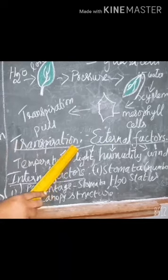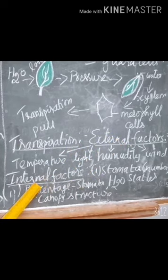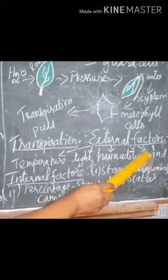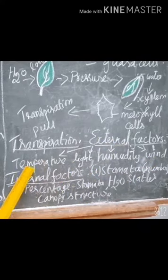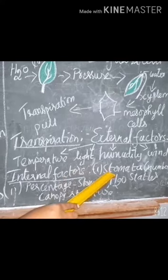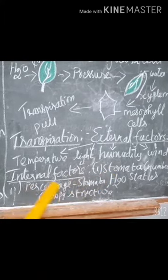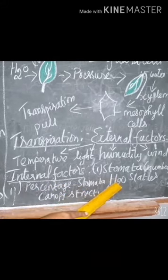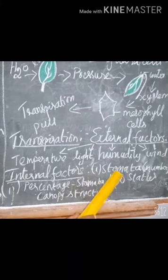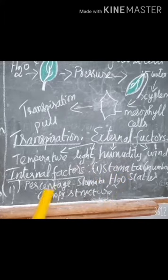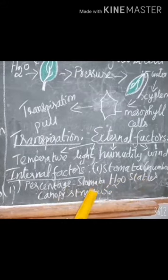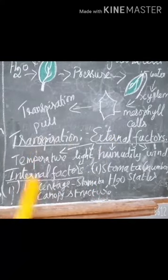Transpiration takes place due to external factors and internal factors. The external factors are temperature, light, humidity, and wind. Internal factors are the number of stomata present in the leaves, percentage of stomata in the leaves, water status in the plant, and canopy structure. These are the internal and external factors of transpiration.